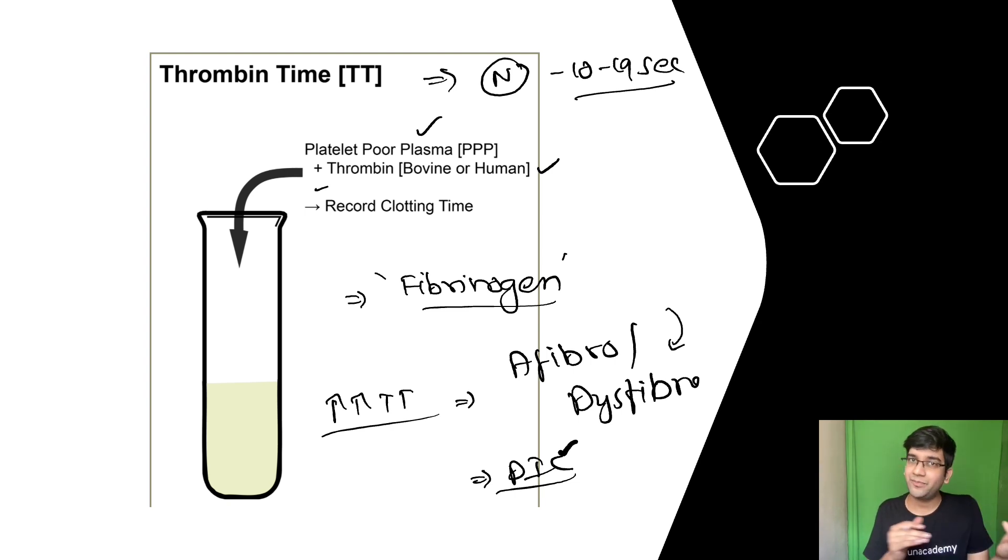So we had a question, which I'm not sure is Hageman factor. We had discussed something in and around the coagulation profile. I did ask you a question. Please do comment on the question. What is the anticoagulant? We are going to use it for your estimation of your PT or your APTT or thrombin time.